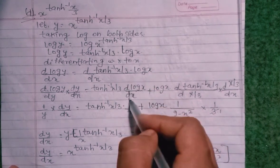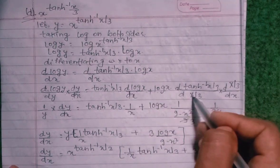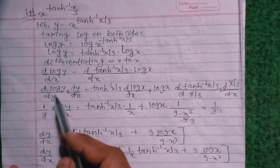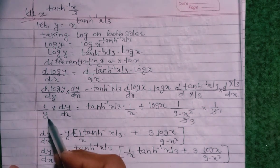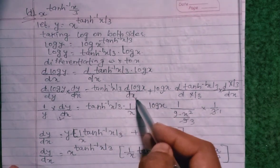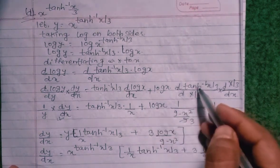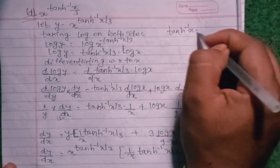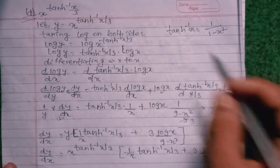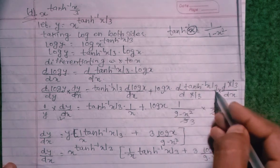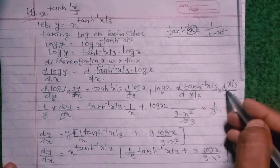So d(log y)/dy times dy/dx equals tan⁻¹(x/3) into d(log x)/dx plus log x times d(tan⁻¹(x/3))/dx. So 1/y times dy/dx equals tan⁻¹(x/3) times 1/x plus log x times d(tan⁻¹(x/3))/dx. And d(log x)/dx with respect to x is 1/x.